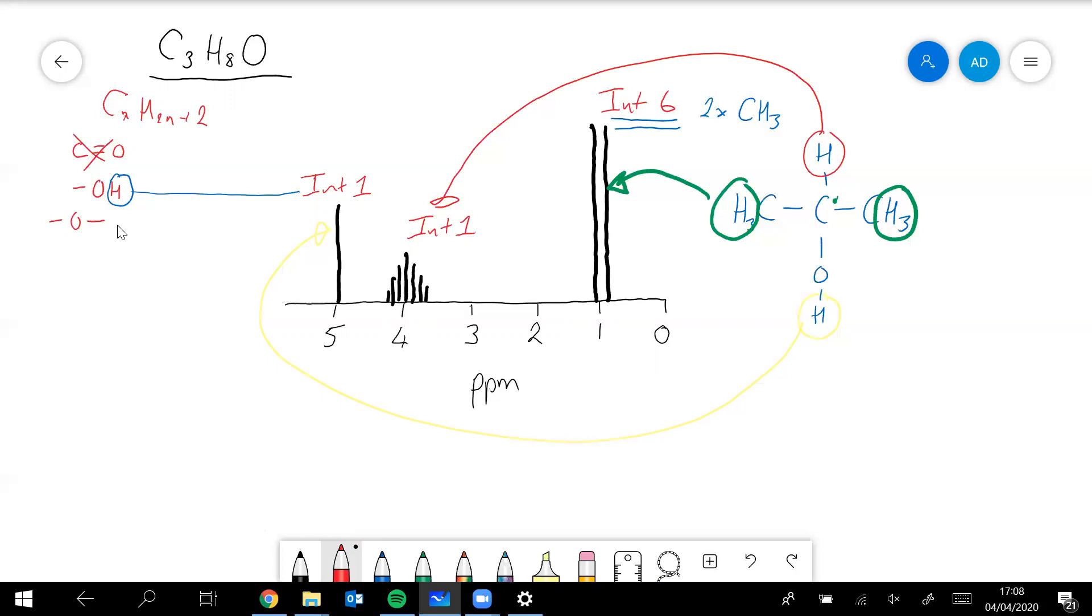Look at the carbon it's attached to, look at the carbons next door. There are two of them, each one's got three, so that's six. So six plus one makes seven. Yes, it should be split into a seven.